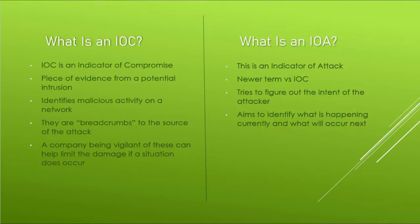We've mentioned IOCs, but what are they? They're a better way to identify if something is going on in the network and are known as indicators of compromise. Indicators of compromise are pieces of evidence from a potential intrusion that can identify suspected malicious activity on a network. They can be used to identify types of threat activity including malware infections and security breaches. Some describe these pieces of information as breadcrumbs that can be followed to the source of the attack. The more accurate and faster your company is at identifying what is going on means that the damage can be limited or the attack can be stopped completely.